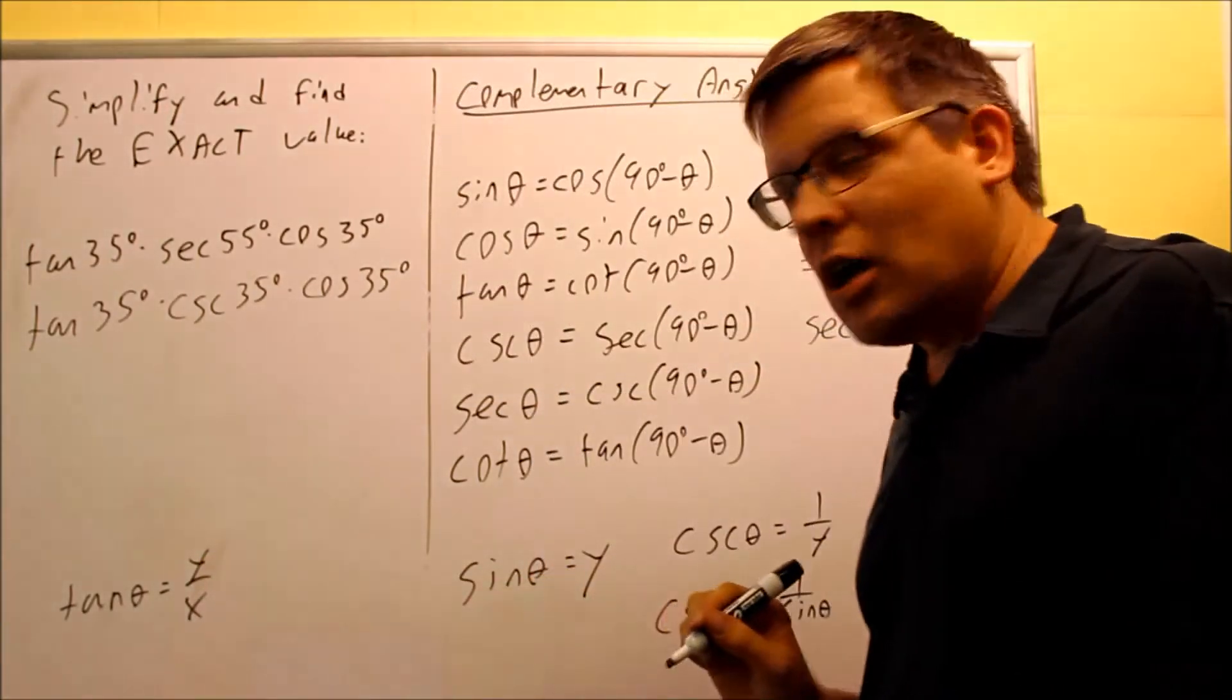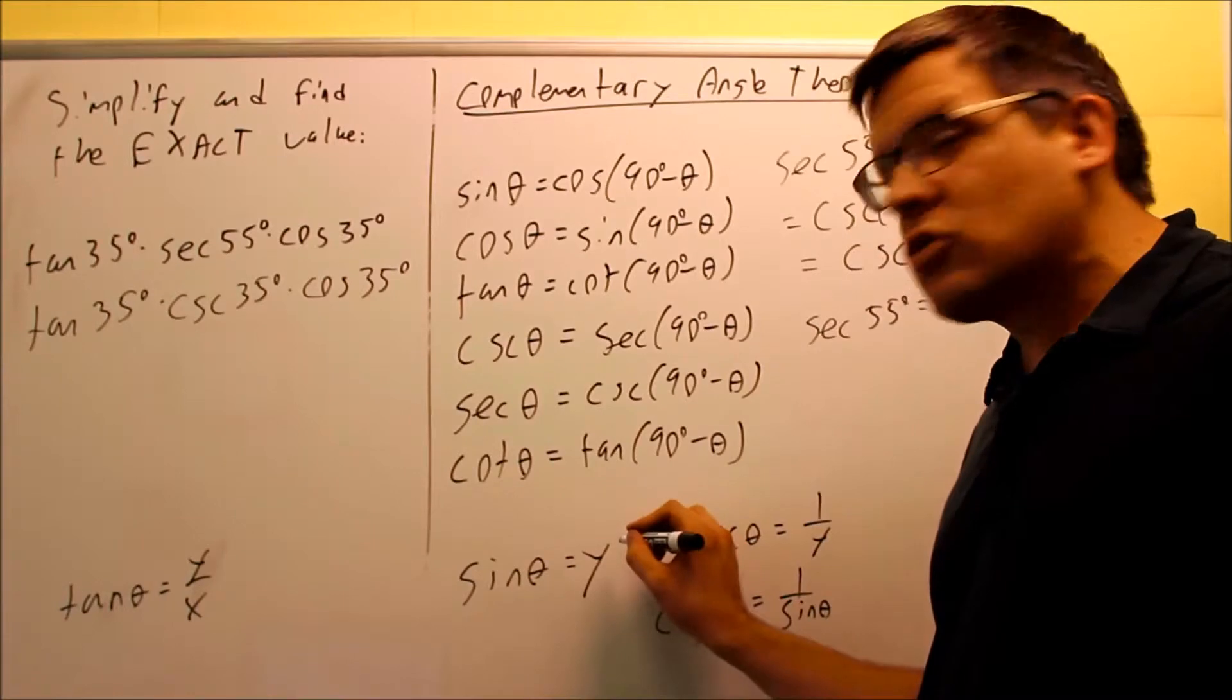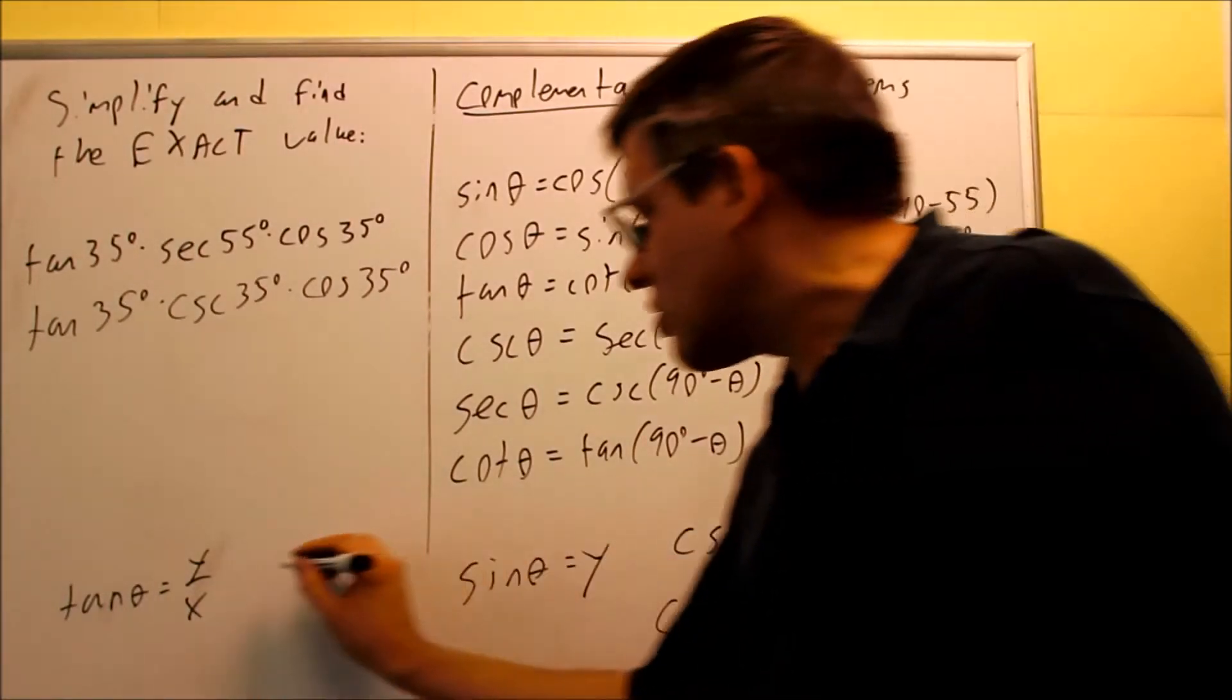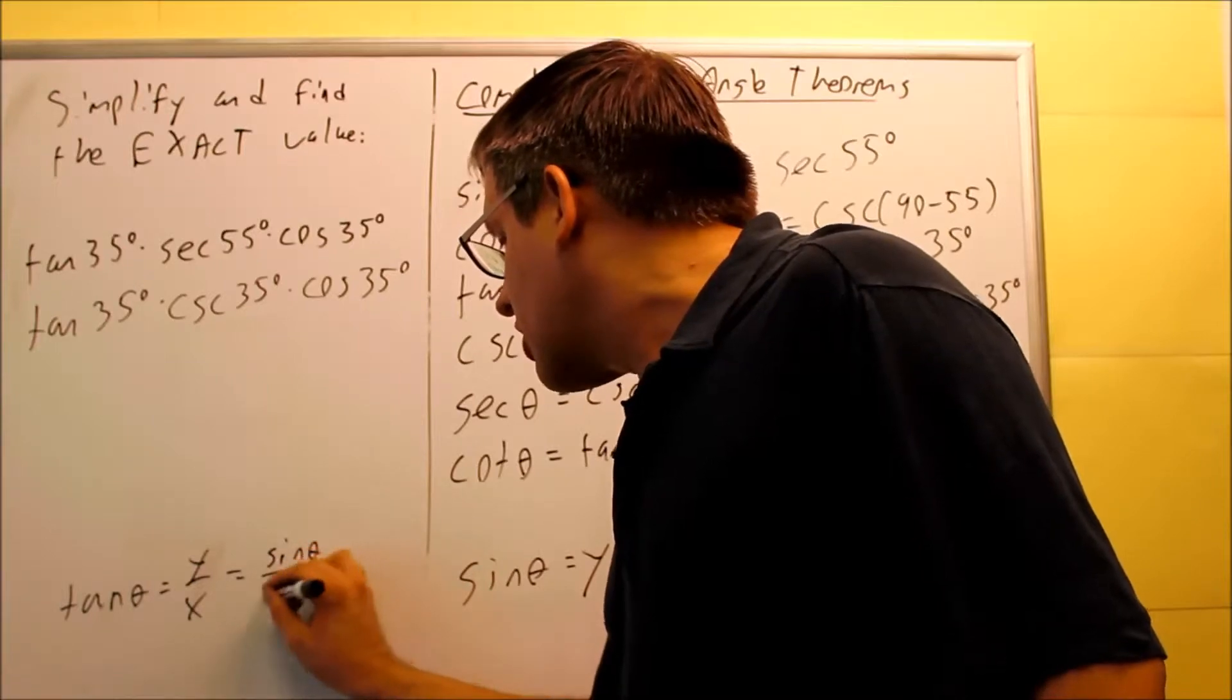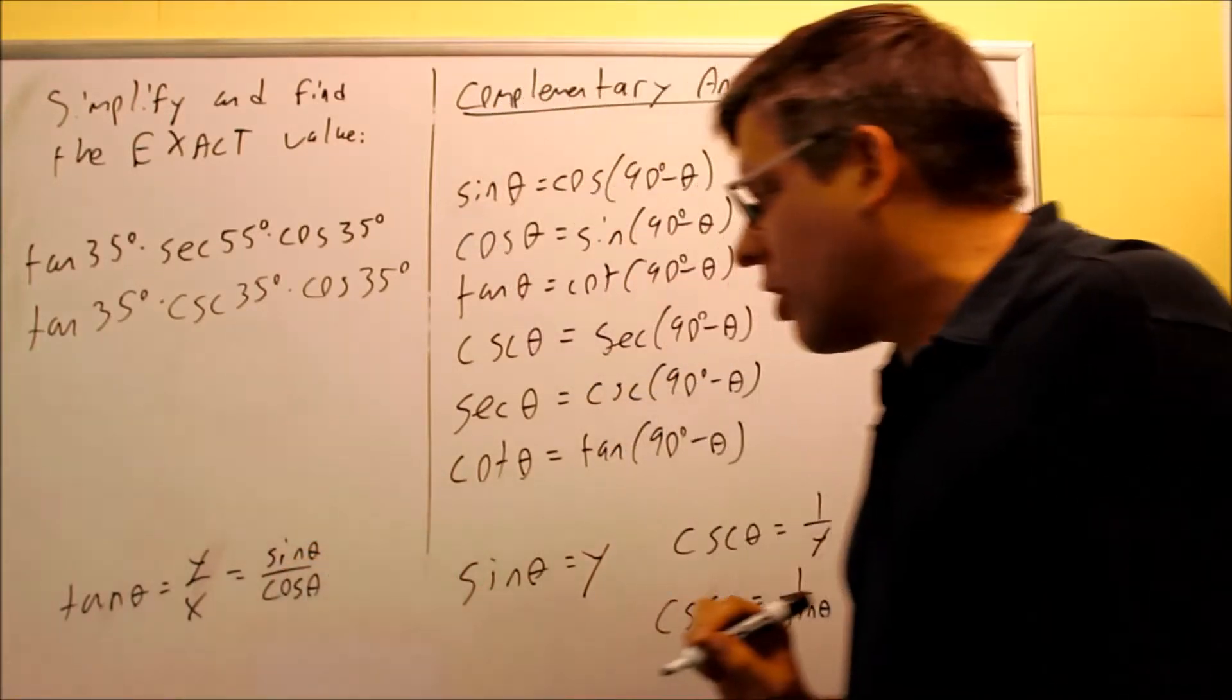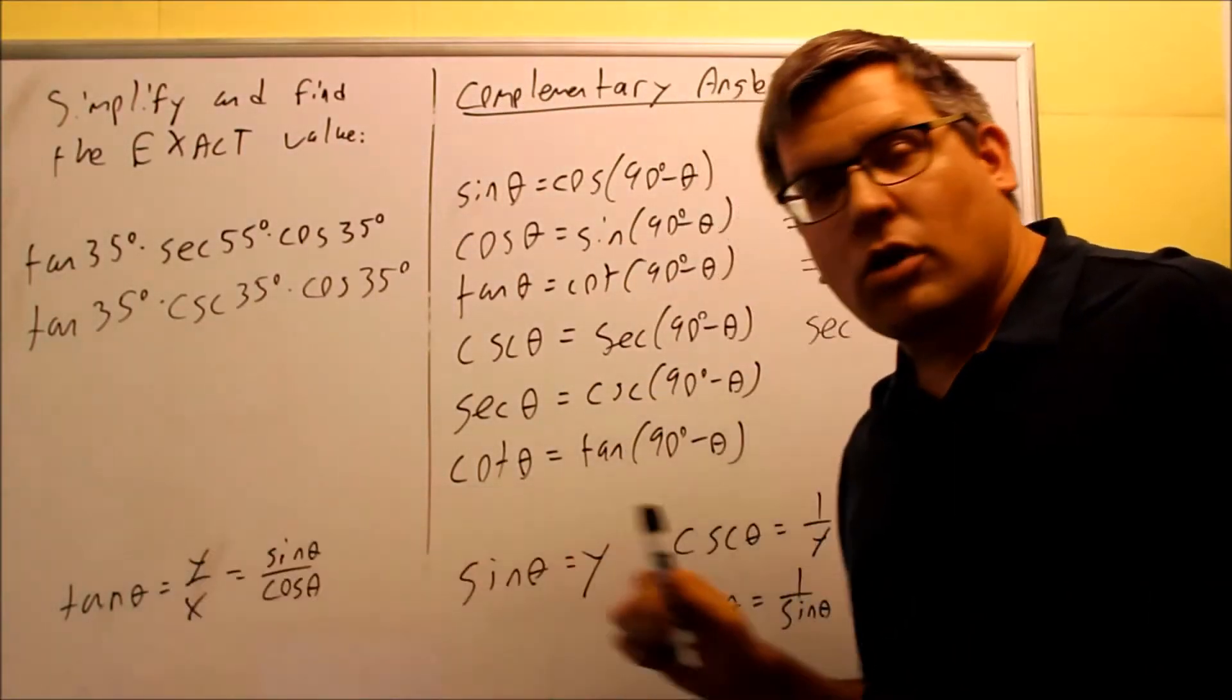So y over x, we know what sine theta is y and cosine is equal to x. So, I could actually come up with an identity for this one. Sine divided by cosine would be another identity for tangent.